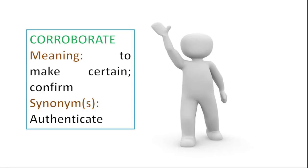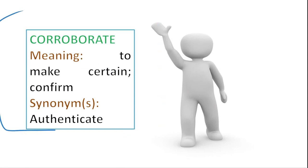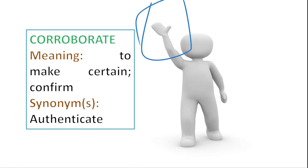Corroborate in very simple language means to back somebody else's story. For example, a witness in court corroborates the testimony of others — it means to make certain or to confirm something. You're making it authentic. That is how we use the word corroborate — like the figure here raising his hand saying: I corroborate, I agree and confirm that XYZ is telling the truth.